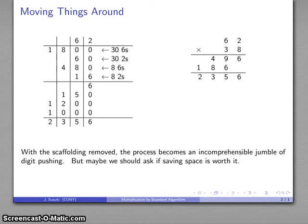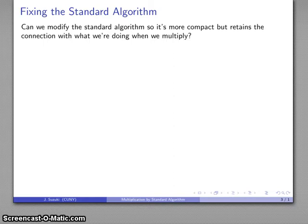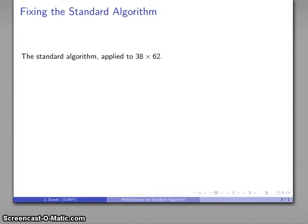So maybe we should ask, is it really worth saving space? Well, it is reasonable to want something more efficient. So the question we might ask is, can we modify the standard algorithm so it is more compact, but it retains a connection with what we're doing when we multiply. So let's take a look at that.